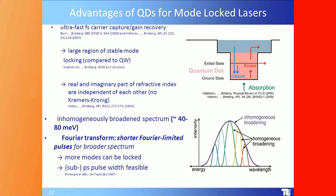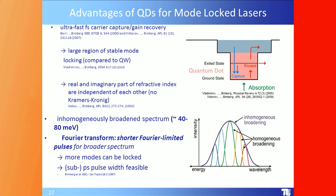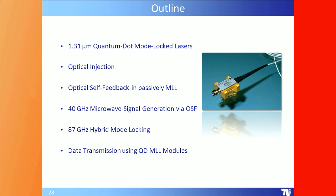The real and imaginary parts of the refractive index are independent — we don't need to obey Kramers–Kronig. The inhomogeneously broadened spectrum is composed of many homogeneously broadened lines, meaning the broader the spectrum, the shorter the pulses, since pulse width is the Fourier transform of the inhomogeneous linewidth of the gain. More modes can be locked, and it is easier to produce picosecond or sub-picosecond pulses.